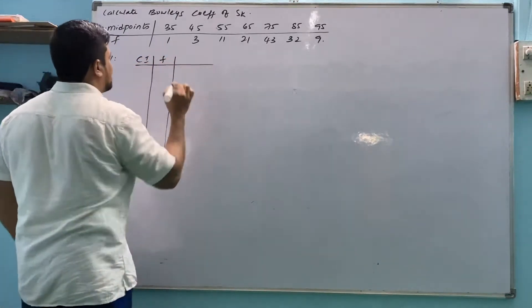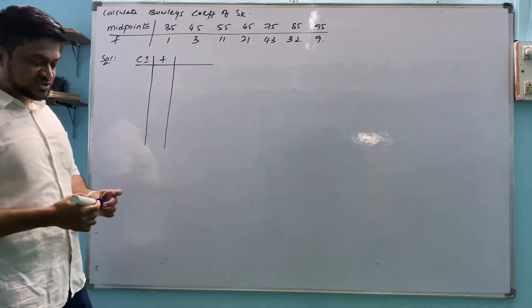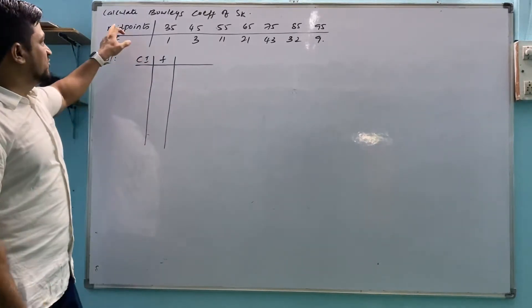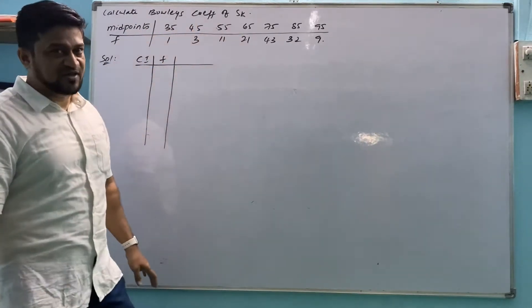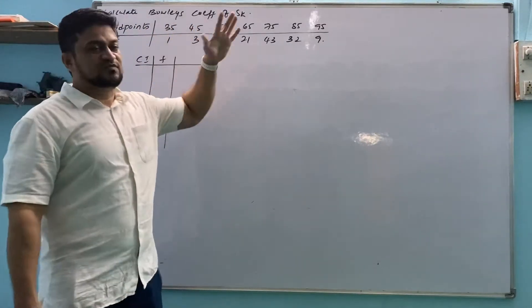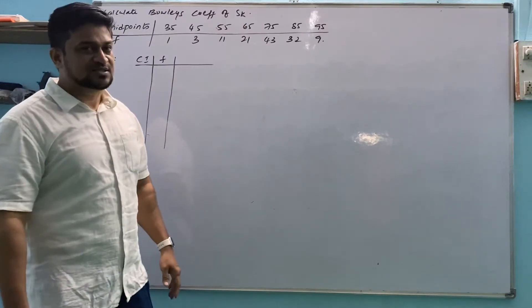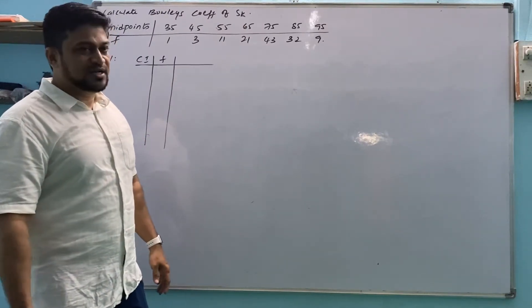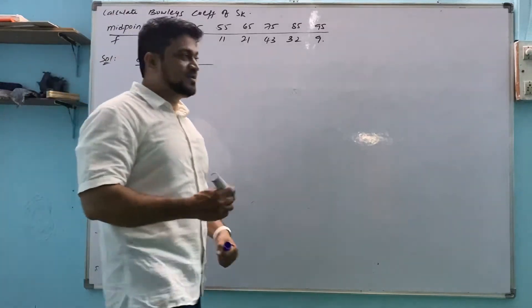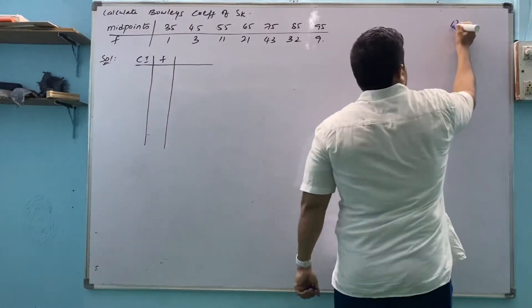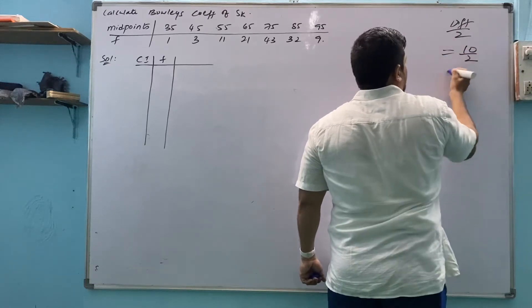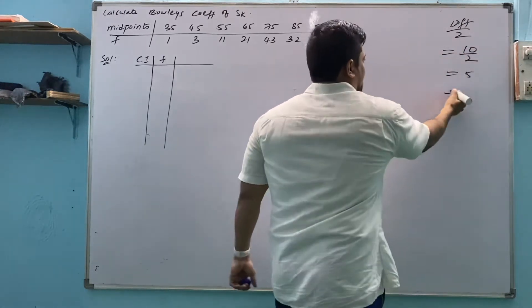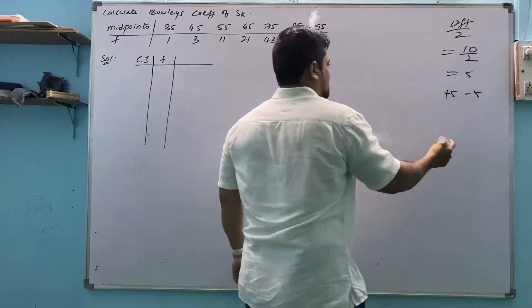How to find class interval? I told you how to arrange the questions in video. In that video, whenever midpoints are there, first see the difference. How much difference we have? 35, 45, 55. We find 10, 10 units difference in between the classes. So what we have to do is 10 divided by 2. Difference divided by 2. We find difference 10 divided by 2 which is 5. So add 5 and subtract 5 to the value.